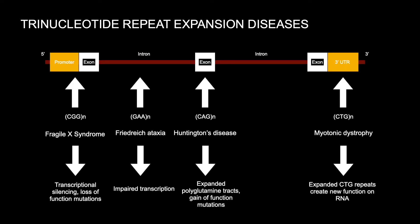Trinucleotide repeat expansion diseases are a series of diseases that occur due to repeating base pairs in the genetic code. A trinucleotide is a sequence of three base pairs. Sequences of three nucleotides repeated in tandem on the same section of that gene is what we call a trinucleotide repeat. It can cause changes in gene expression regulation, produce toxic RNA, or destabilize a chromosome. The greater amount of repeats typically indicates a faster onset and increased severity of a disease.